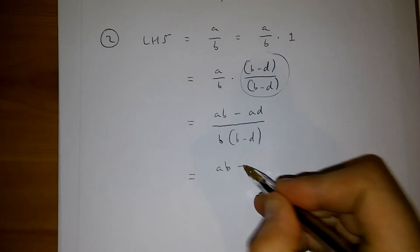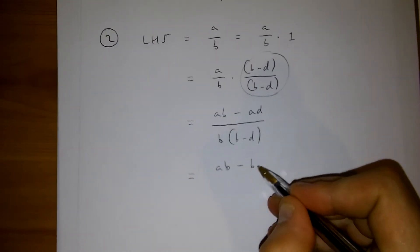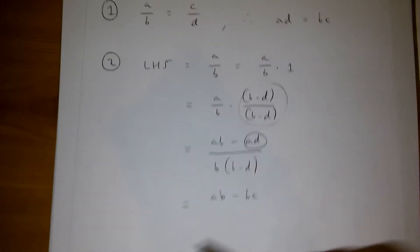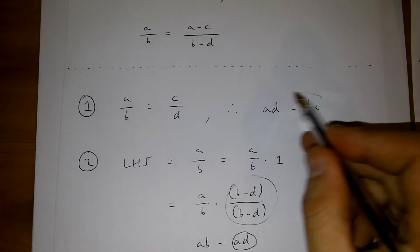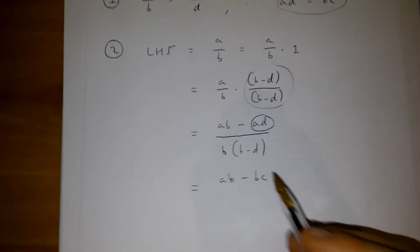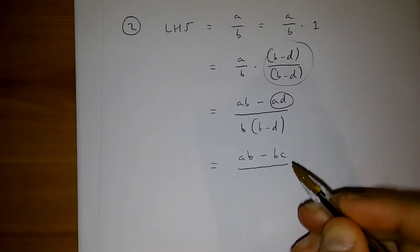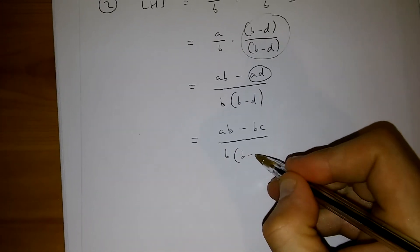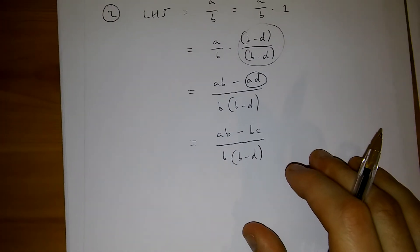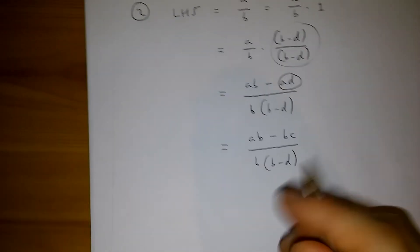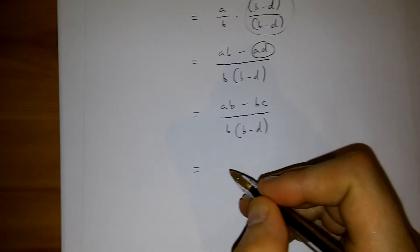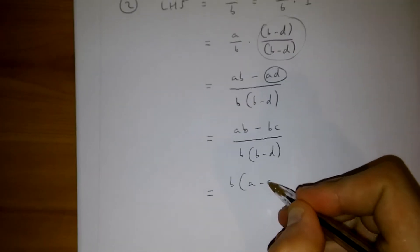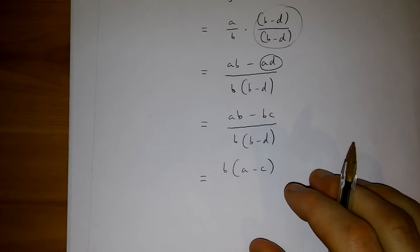ab minus ad over b times b minus d in brackets. And this is going to be the same as b minus d in brackets, multiplied by a minus c in brackets,